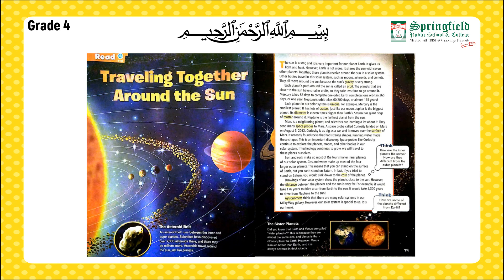The planet farthest from the Sun is Neptune. Mars is our neighboring planet and scientists are trying to discover life there — they have sent many space probes to Mars. Iron and rock are two of the most important materials making up the smaller inner planets.